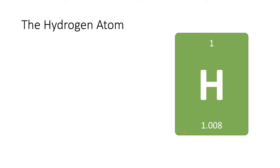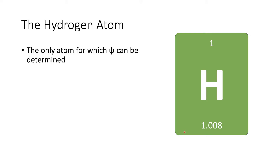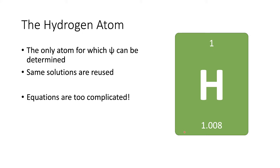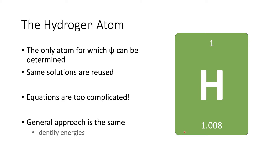The key point of study here is the hydrogen atom. It's the only atom for which we can determine the wave function, because we have a single electron and a single nucleus. We simply reuse the same solutions for bigger atoms, but once we put more electrons in, the equations become too complicated. So all of our understanding of atomic orbitals is based on a hydrogenic atom. The general approach is the same — we identify the energies we're considering and solve the Schrödinger equation for that particular set of energies.